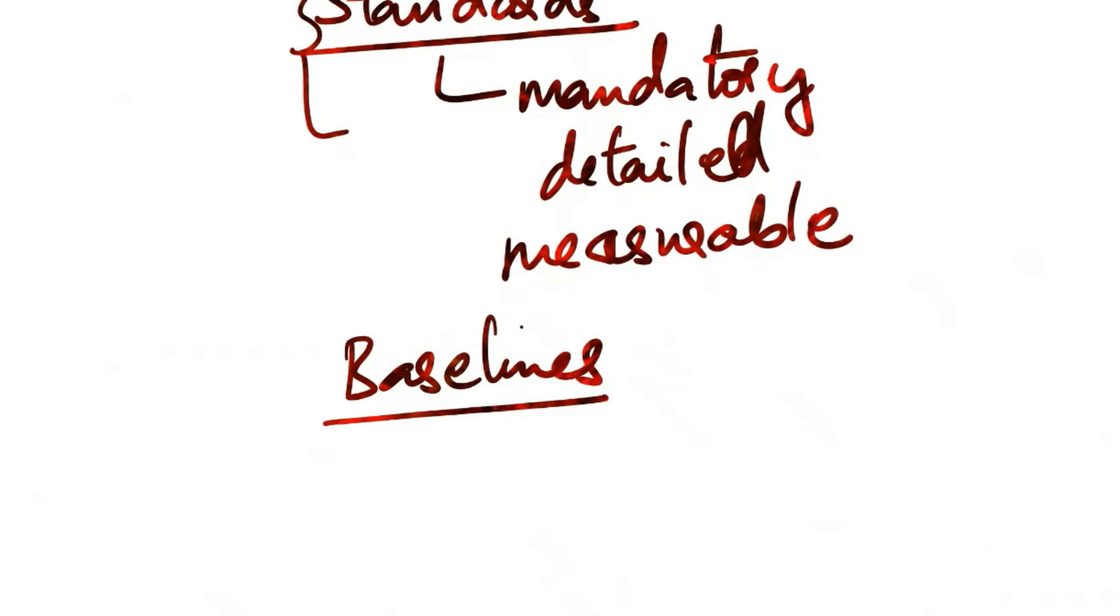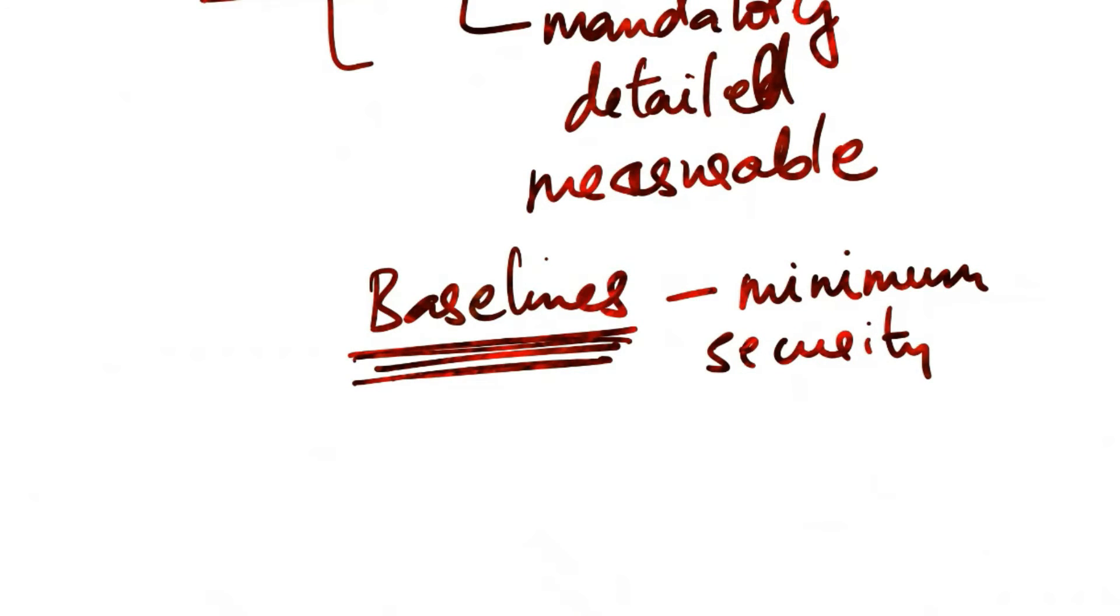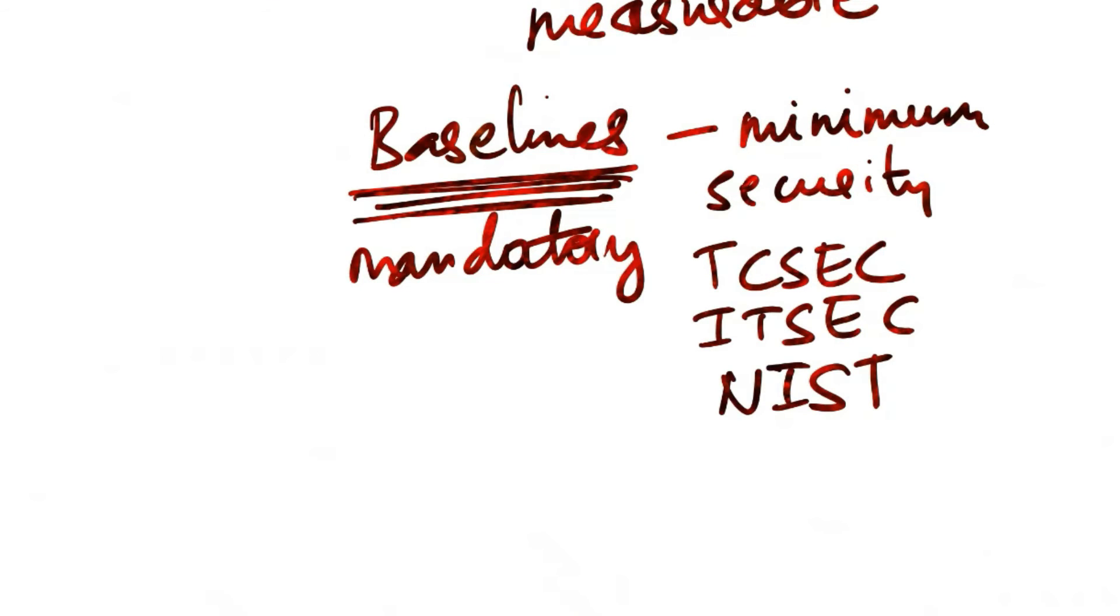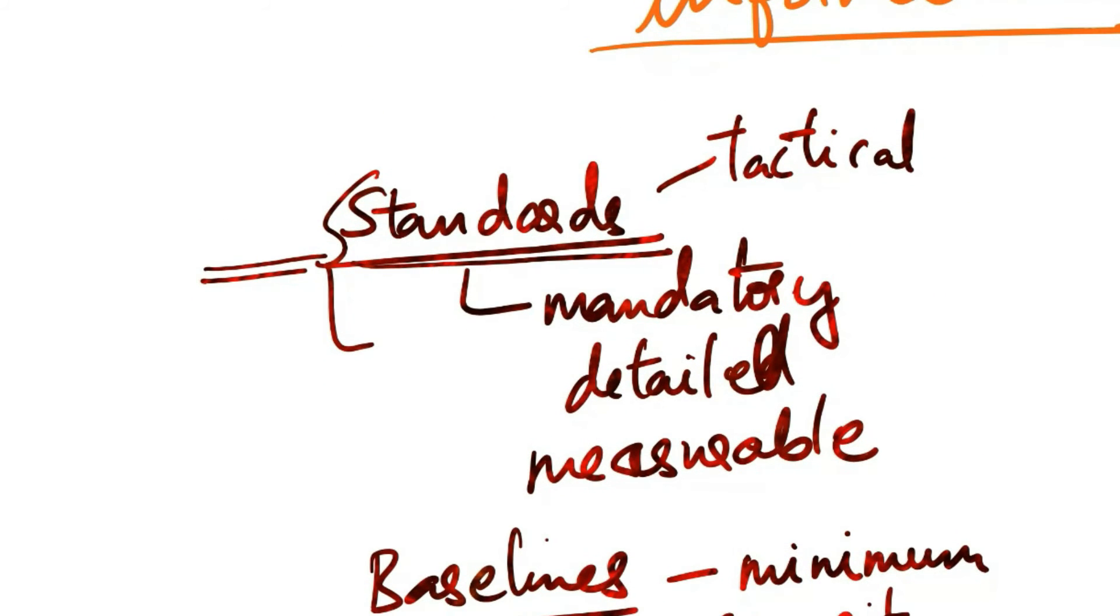Then there is baselines. Baselines you can consider at the same level as standards or as a subset of standards. Baselines establish the minimum security controls needed for a particular configuration, providing a consistent reference point. Baselines set the minimum security level that every system must meet, creating a foundational secure state. Baselines are mandatory. Baselines are specific to system types and may reference industry or government standards such as TCSEC, ITSEC, or NIST. They offer a reference point for subsequent security measures. In summary, standards are specific and granular, giving direction to support broader policies, while baselines provide a consistent basis for an organization's security architecture. Both contribute to the overall security framework, ensuring a uniform and effective approach to safeguarding information and systems.